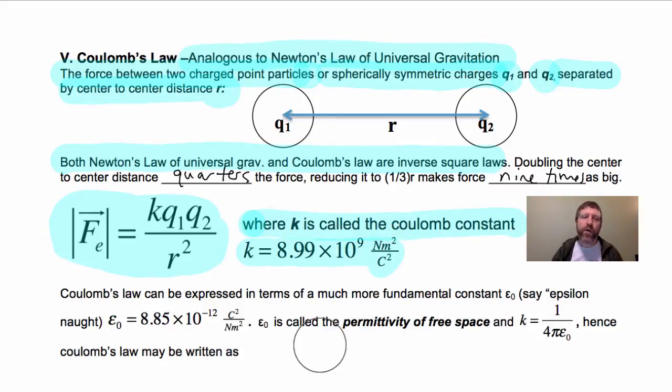It's about 9.0 times 10 to the 9, which for back-of-the-envelope calculations you can use. But notice that it's K, this Coulomb constant, times the two charges, Q1 times Q2, over the center-to-center distance squared.